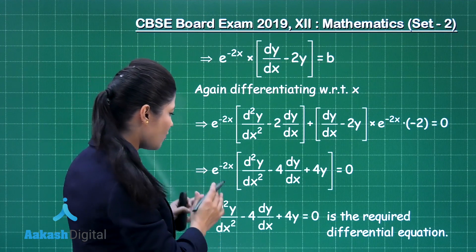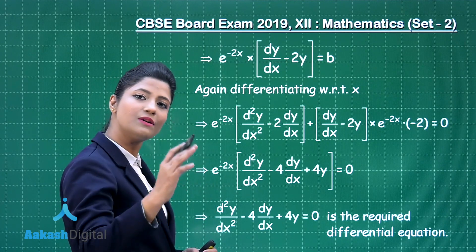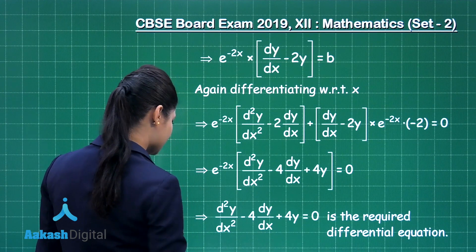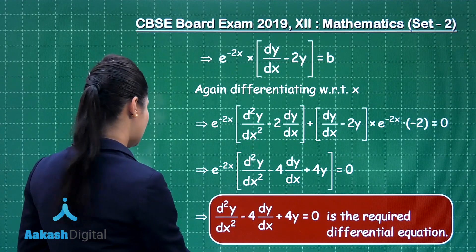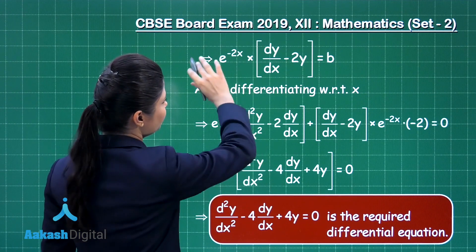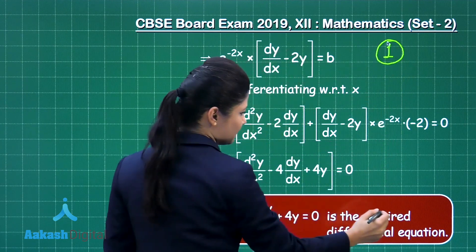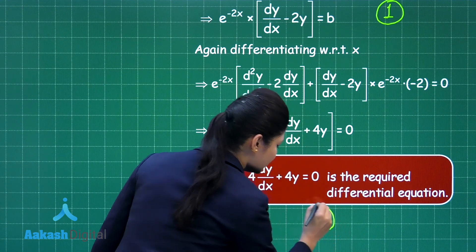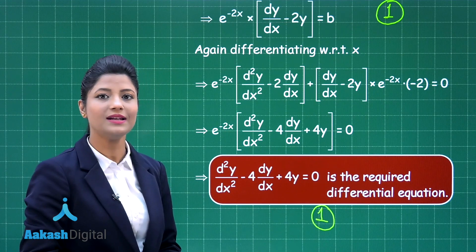In this way we have obtained the required differential equation. When you transpose e^(-2x) to the right hand side it becomes 0, since 0 divided by any quantity is 0. This is the required answer. This was a 2-marker question: obtaining the first differentiation step gives 1 mark, and obtaining the final differential equation gives the remaining 1 mark, totaling 2 marks.